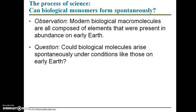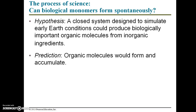To answer the question of whether biological monomers can form spontaneously, a team of scientists observed that modern biological macromolecules — such as carbohydrates and proteins — are all composed of elements that were present in abundance on early Earth. Their hypothesis was that a closed system designed to simulate early Earth conditions could produce biologically important organic molecules from inorganic ingredients, and their prediction was that organic molecules would form and accumulate in this closed system.